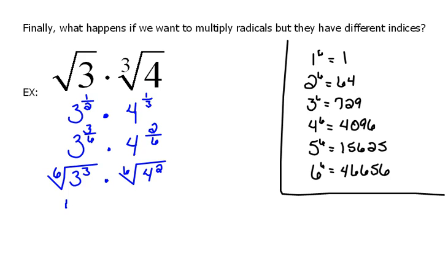So, now we could put those together underneath the same radical. We could multiply our radicands, 3 cubed would be 27, times 4 squared would be 16, and when we multiply 27 times 16, this would be the sixth root of 432.